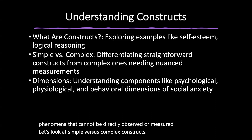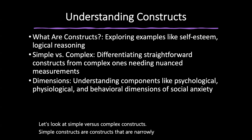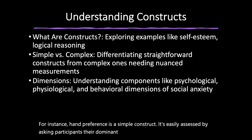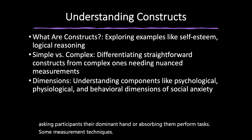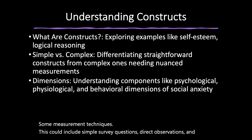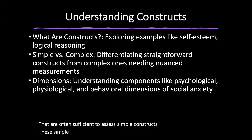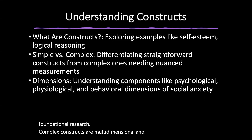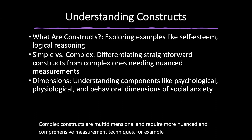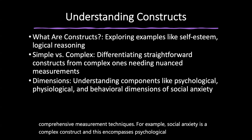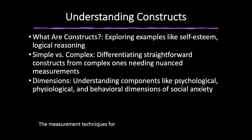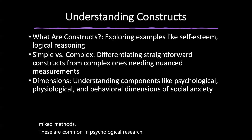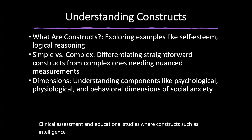Simple constructs are narrowly defined and can be easily measured or observed — for instance, hand preference, easily assessed by asking participants their dominant hand or observing them perform tasks. Simple survey questions, direct observations, and straightforward tasks are often sufficient. Complex constructs are multi-dimensional and require more nuanced measurement techniques. For example, social anxiety encompasses psychological, physiological, and behavioral dimensions. Measurement techniques include psychometric questionnaires, clinical interviews, observations, and mixed methods — common in psychological research, clinical assessment, and educational studies investigating intelligence, motivation, or personality.